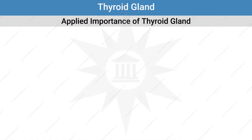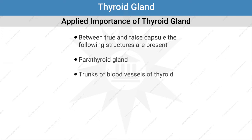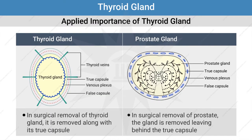The applied importance of the false capsule: in the thyroid gland, between the false capsule and the true capsule, the space contains parathyroid glands and trunks of the blood vessels of the thyroid. The venous plexus of the thyroid gland is situated deep to the true capsule; hence, during surgical removal of the thyroid, the gland is removed along with its true capsule. This is different from the prostate removal where the venous plexus is situated between the true capsule and the false capsule.